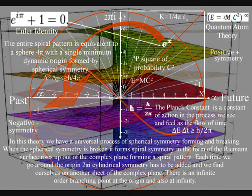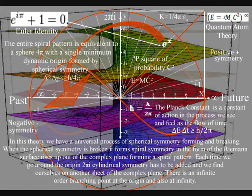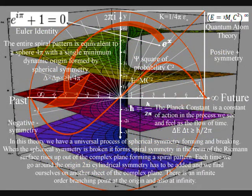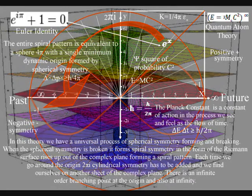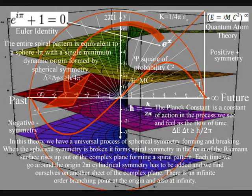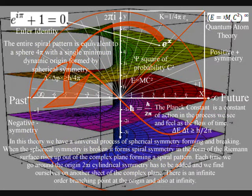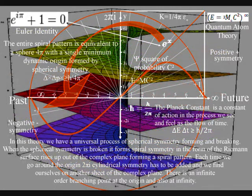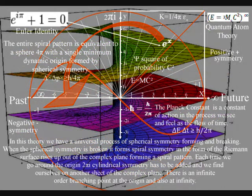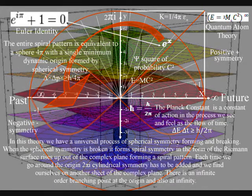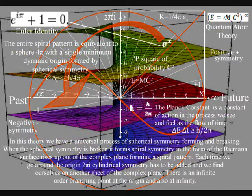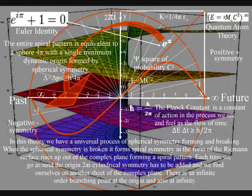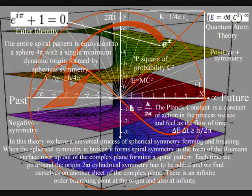It may seem at times that the theory is explaining the paradoxes of mathematics rather than the mathematics explaining the theory. This is because human mathematics is based on the dynamic geometry of this theory, as can be seen in the way Euler's identity and imaginary numbers are part of the theory. At each rotation of the origin, 2pi cylindrical symmetry has to be added, and we find ourselves on another sheet of the complex plane. This spiral symmetry forms line symmetry representing the timeline or arrow of time.